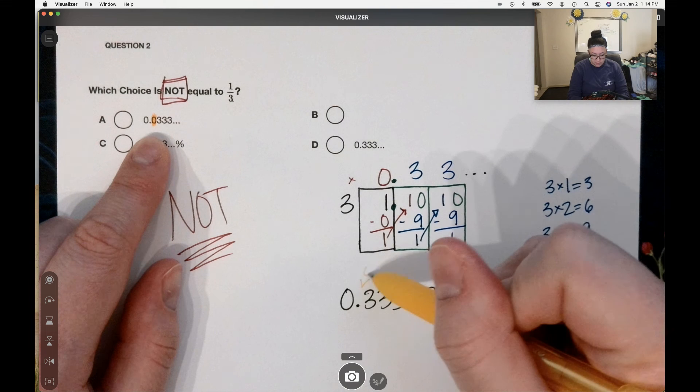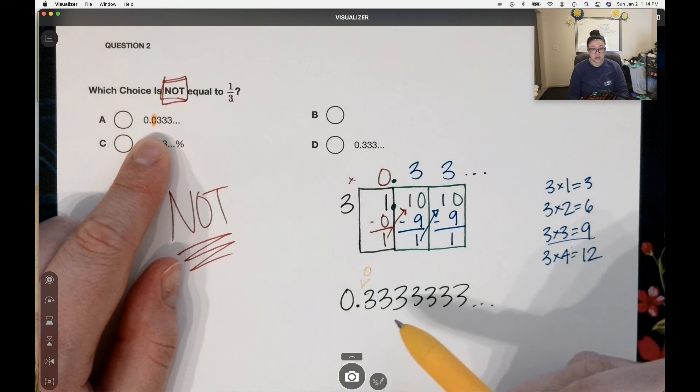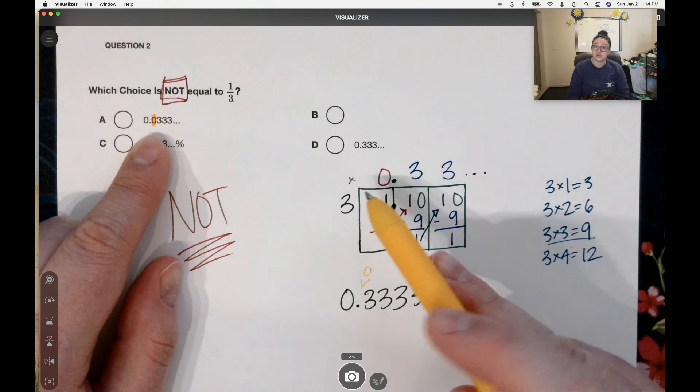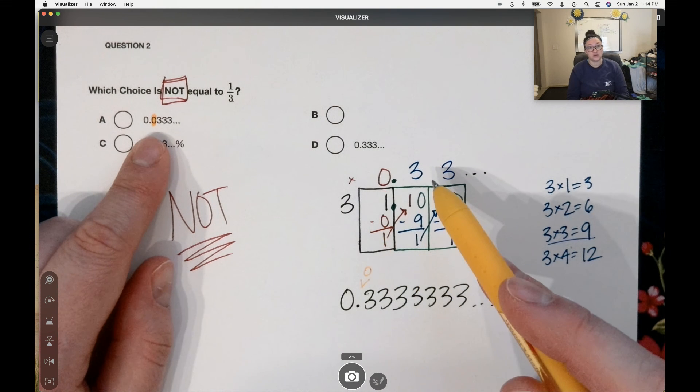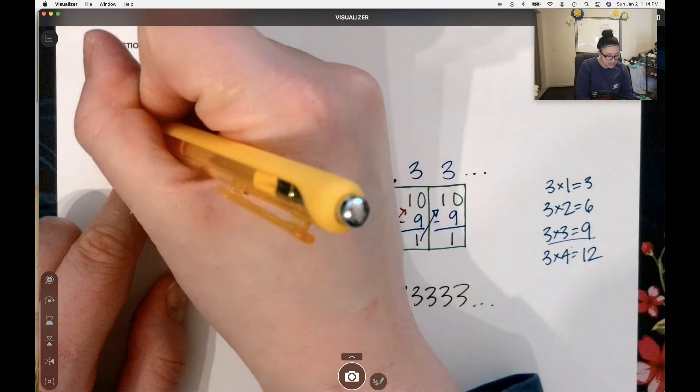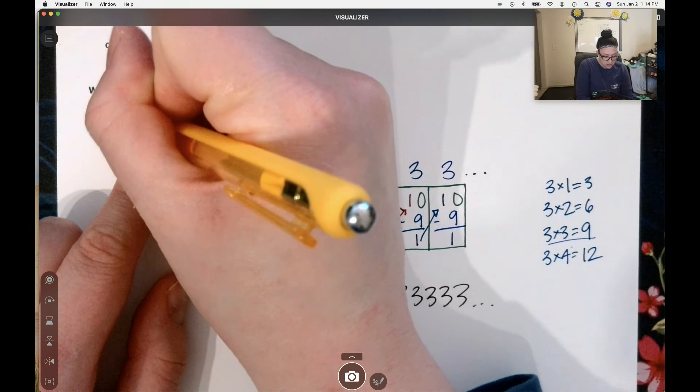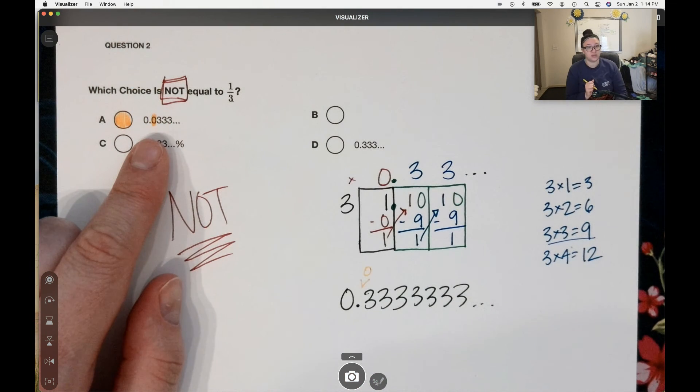Again, this one has a zero before my threes start. That's not correct. The zero is in front of the decimal. There is no zero after. So A is not equal to one-third.